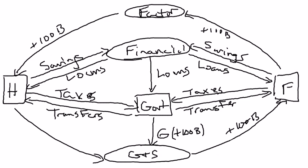Now households can do something with that extra $100 billion — they can save it, pay some in taxes, or purchase goods and services with it. So there might be extra spending in the bottom part of the circular flow as well. The key point is when the government spends more, that can create an extra $100 billion worth of expenditures, increasing total spending in the goods and services market and increasing total income in the factor market. And because incomes go up, households will spend more, which leads to more revenue for firms, more payments in factor markets, and even more income — that's the multiplier effect.